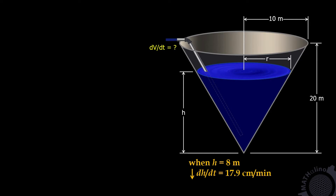In the conventional solution, we write the volume of the water inside the tank. Volume is one-third times the area of the base, pi r squared — that is the area of the water surface — times the depth h. By proportion, r to h equals 10 to 20. Therefore, r equals h over 2.